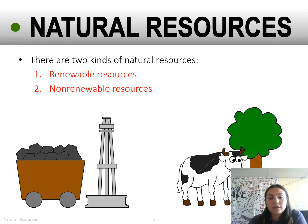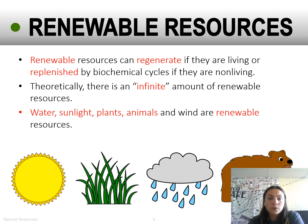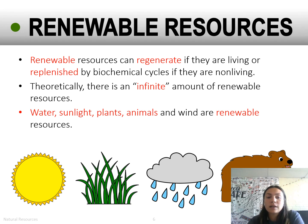There are two kinds of natural resources. The first is renewable resources, and the second is non-renewable resources. Renewable resources can regenerate if they are living, or be replenished by biochemical cycles if they're not living. Theoretically, there is an infinite amount of renewable resources. Some examples are water, sunlight, plants, animals, and wind.